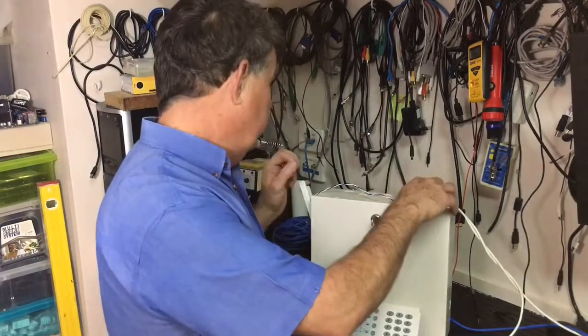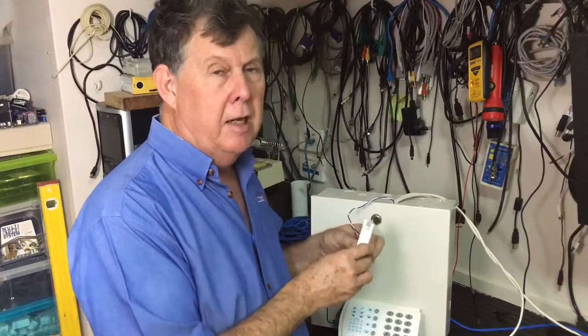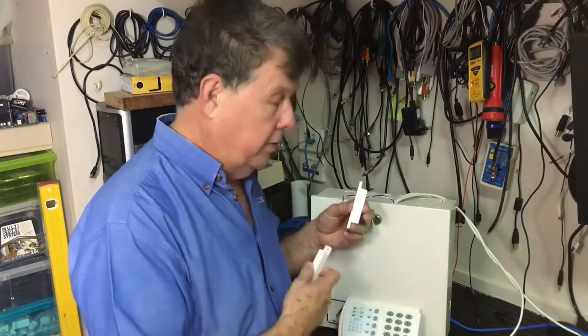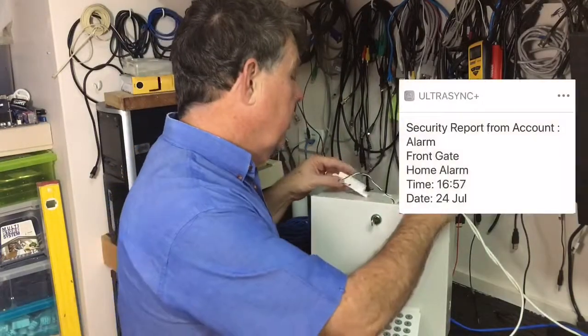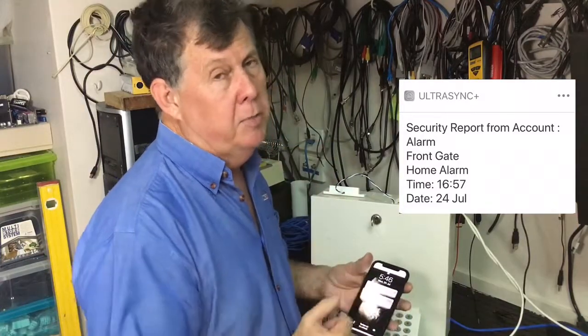Once we exit out of programming mode, we can actually test our reed switch to see if it works. So we would close the gate. The gate's now closed. Basically what we do is we open the gate. We expect to get a chime on our keypad to tell us that the gate's been open. And also there's a notification popped up on our phone to say the gate's been open. Really, really simple.